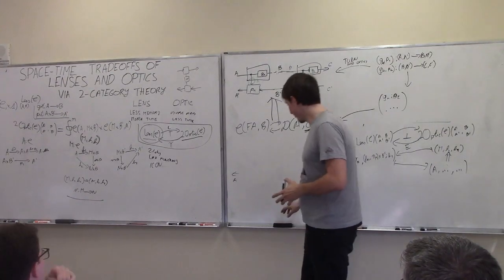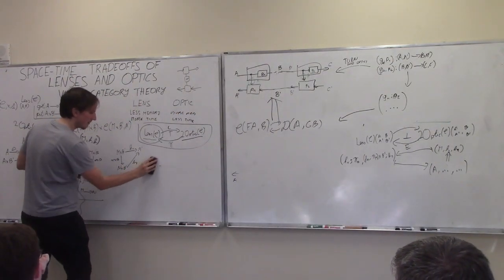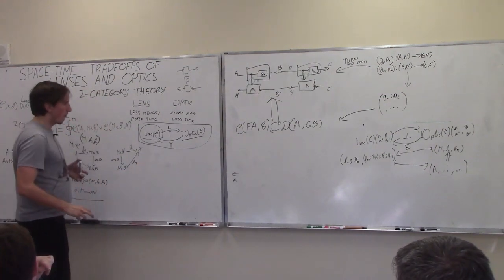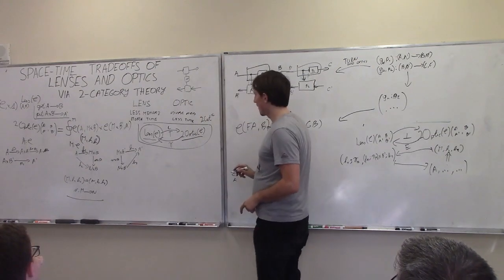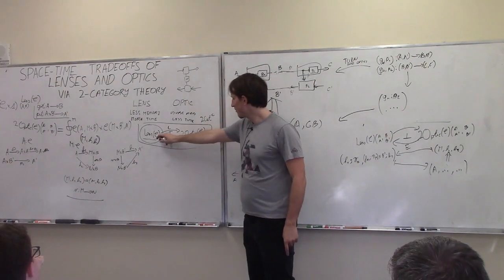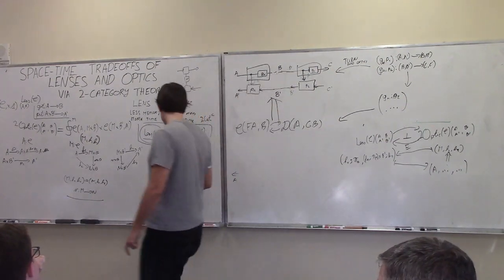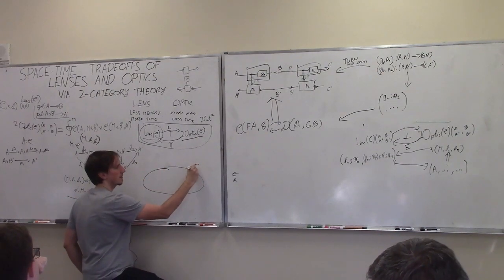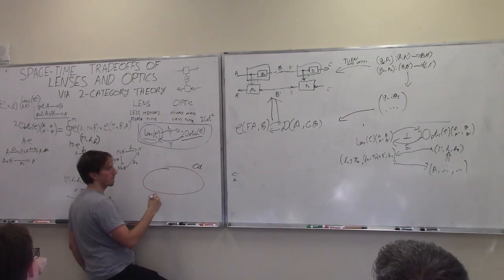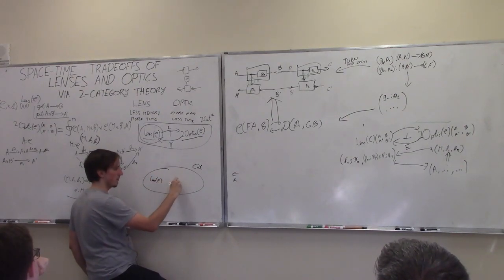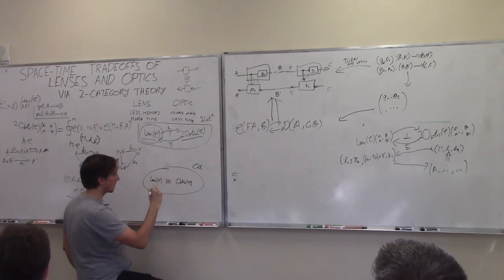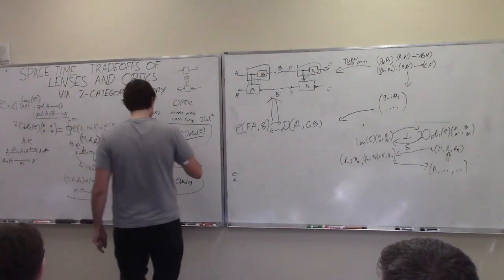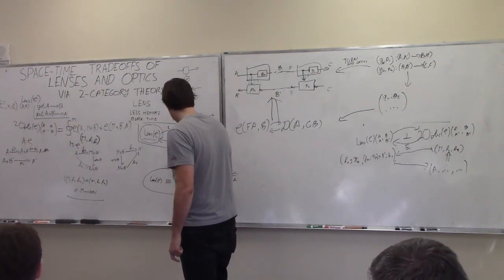To wrap it up: this all tells us one last thing. We write this as the two-category 2-Cat-icon — a two-category of two-categories, lax functors, and icons. Now you can write Cat — simply categories and functors — and write our usual categories: lens(C) and optic(C). It turns out the previously established isomorphism of these categories is actually an image of this adjunction under a particular functor that uses base change along connected components.